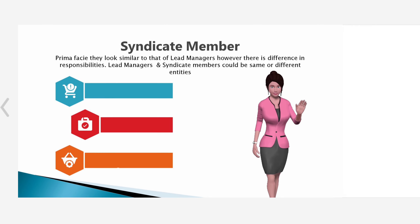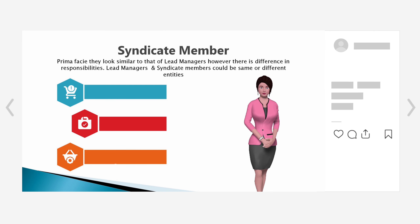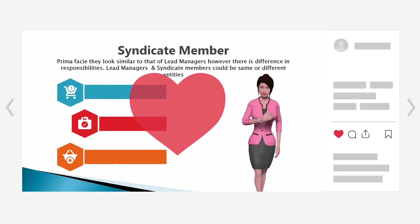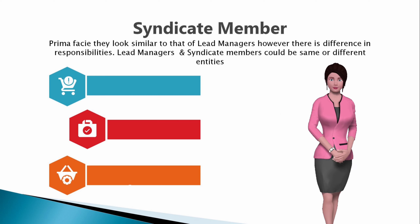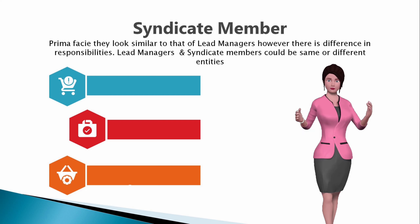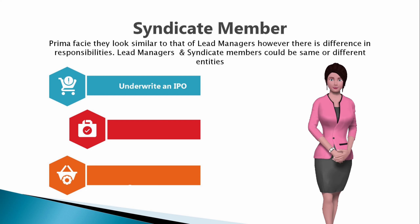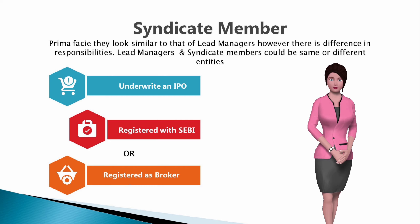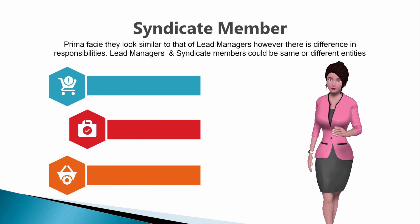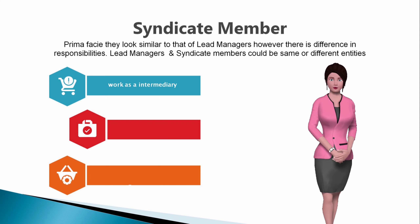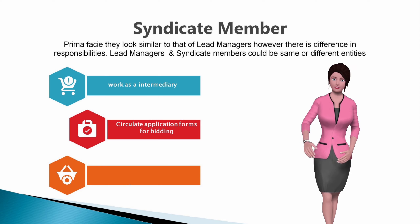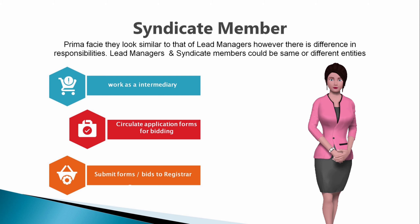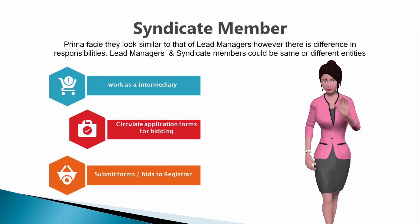Now let us understand about syndicate members. Prima facie, they look similar to that of lead managers. However, there is a difference in responsibilities. Lead managers and syndicate members could be same or different entities. Syndicate members are commercial or investment banks responsible for underwriting IPOs. Syndicate members are usually registered with SEBI or registered as brokers with stock exchanges. Their responsibilities include working as an intermediary between investors and the issuer company, circulating application forms for bidding, and collecting bids for the issuer company.